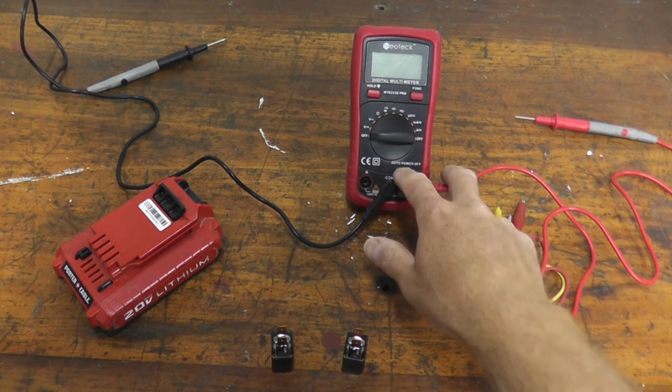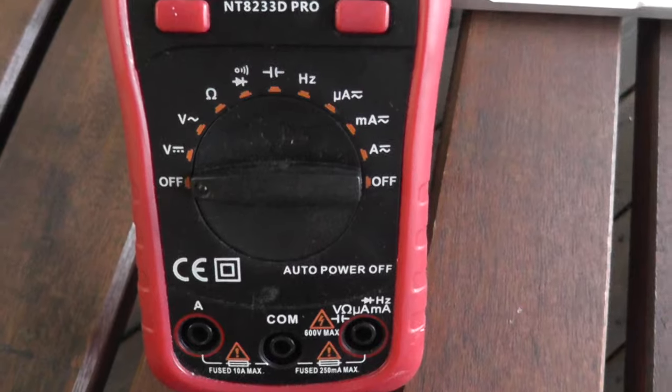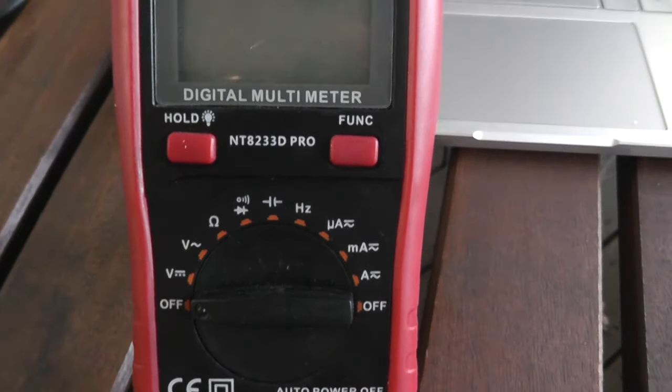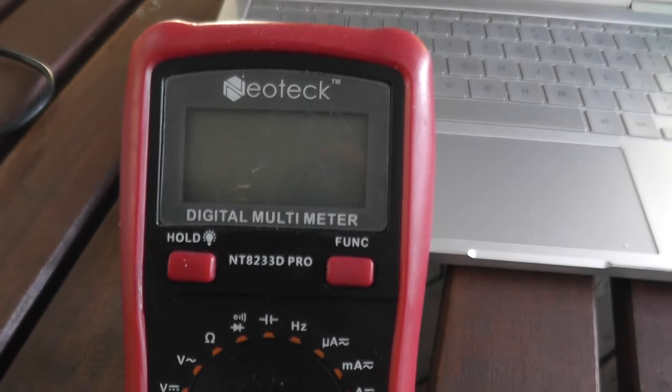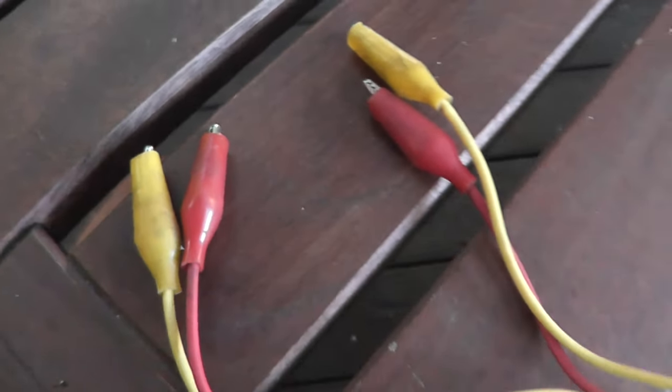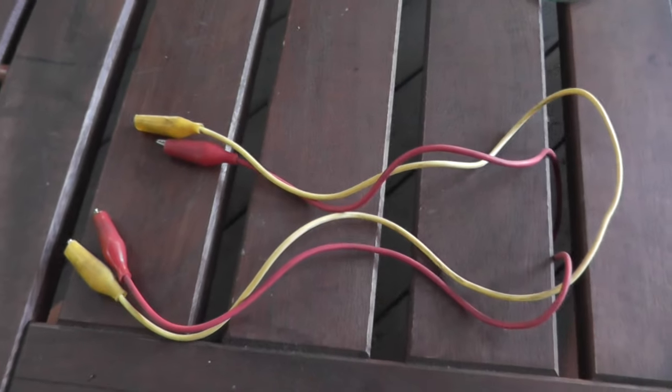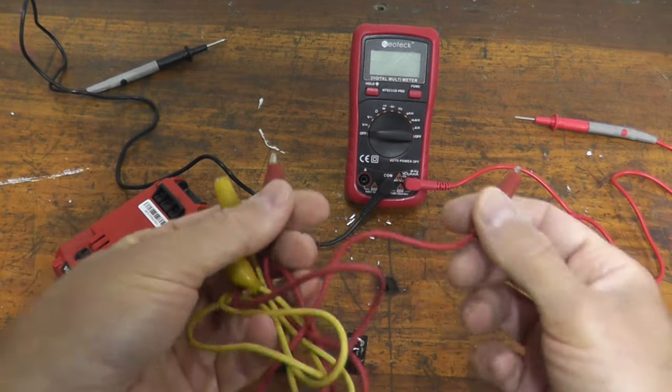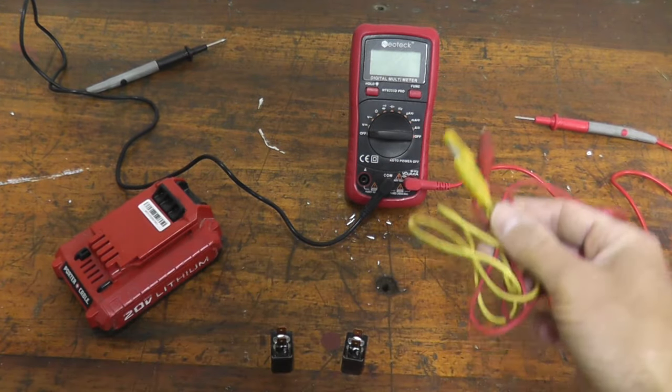So this is a digital multimeter. These cost roughly $20 to $25. This is off Amazon. Again, I'll have links in the description box below if you need anything. These are just alligator clips. It's just a single wire with clips on the end. Not necessary, it just makes the job easier. These are very inexpensive as well.